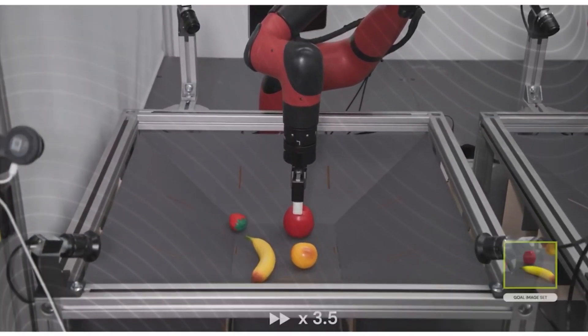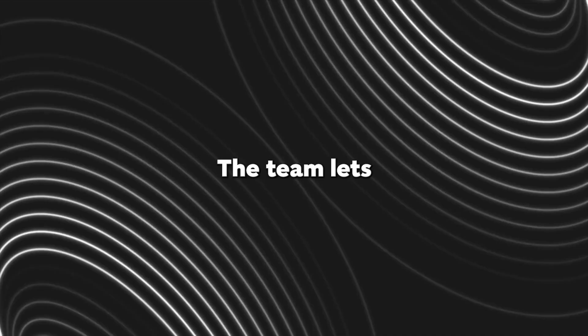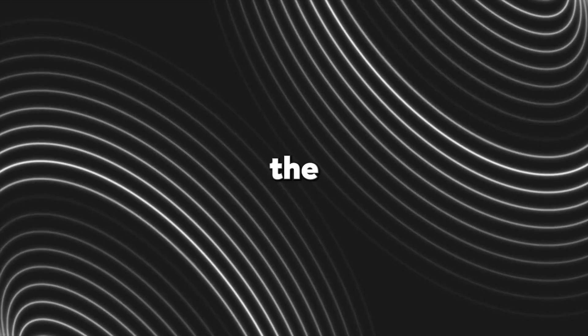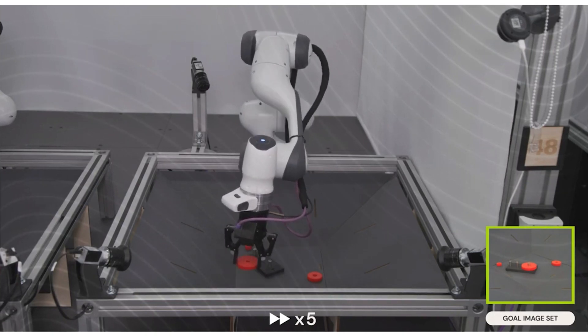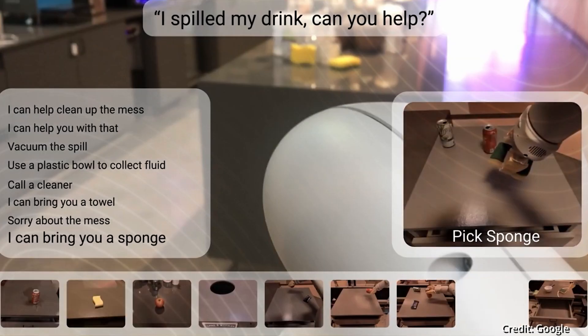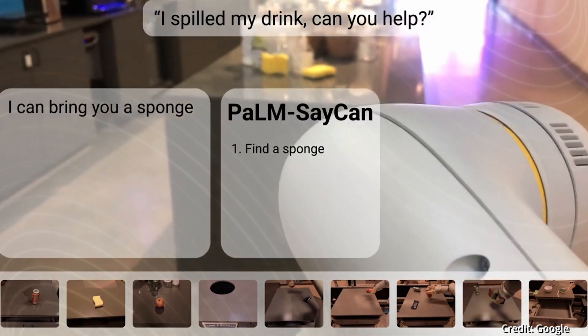To showcase the versatility of RoboCat's skills, the team lets this AI control the entirely new Sawyer arm. They then place the objects in front of a Sawyer robot, which possesses different action specifications compared to the panda robot RoboCat was controlling earlier.